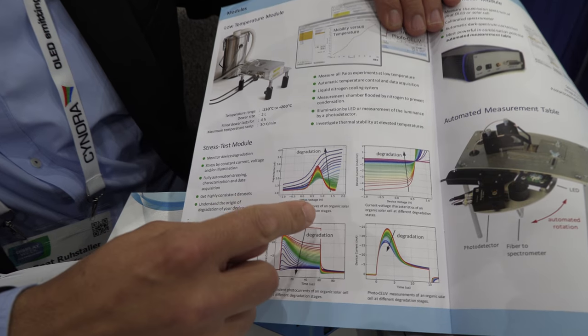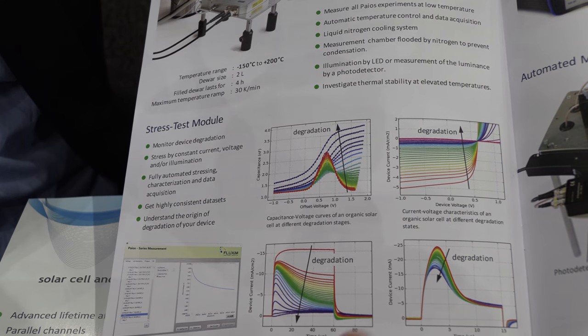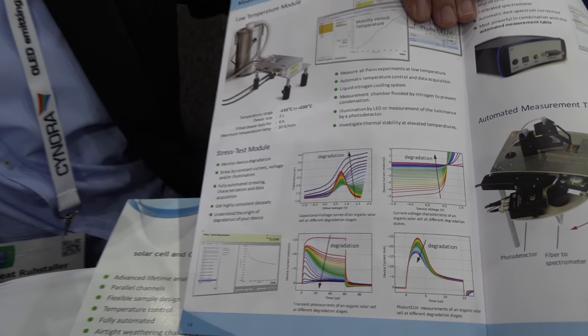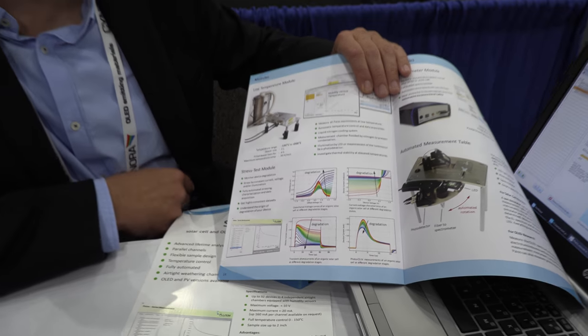You see that there's a systematic change from a fresh to a degraded device and by doing more than this simple decay curve, we can actually try to understand the customer, understand why his OLED device is degrading.